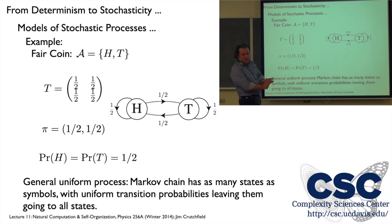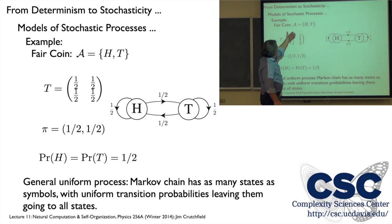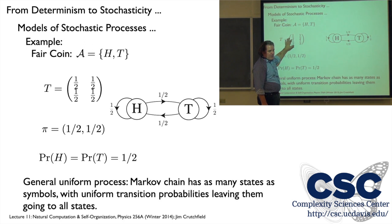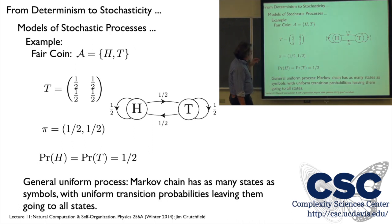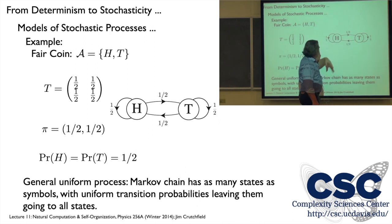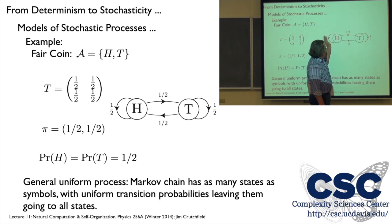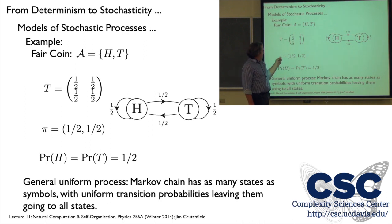Some examples. Fair coin: I have two states, heads and tails, and a two-by-two transition matrix. If it's fair, the transition from heads back to itself or to tails is equal probability, and same going from tails. I can write out the label-directed graph: two states with all edges present and equal probabilities. Calculating the eigenvector and normalizing gives 50-50, no surprise. Similarly, for a larger alphabet, the Markov chain has as many states as there are symbols, and as many transitions as there are symbols.